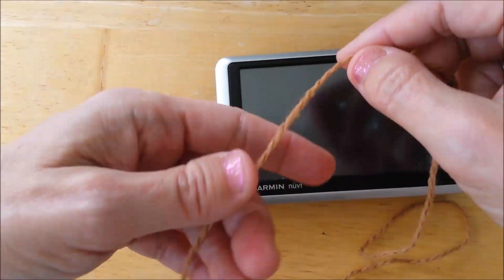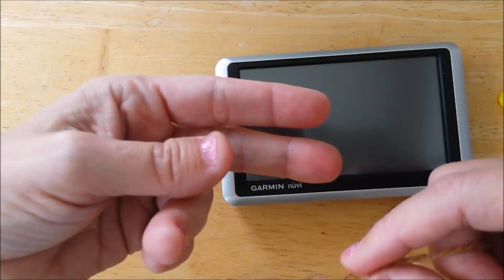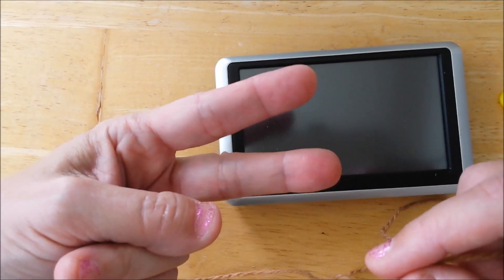So we're going to start with just a chain stitch. You can look at my how to get started videos, but basically I'm going to make a peace sign.